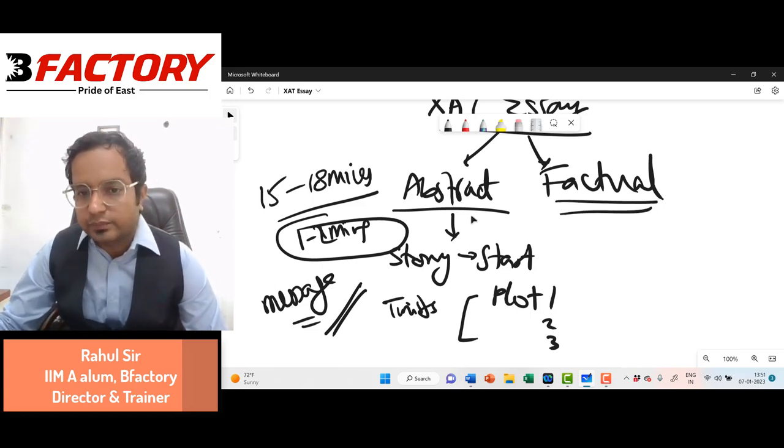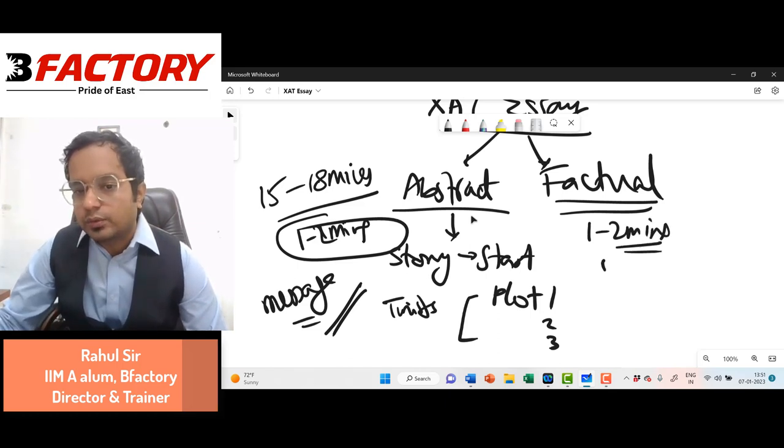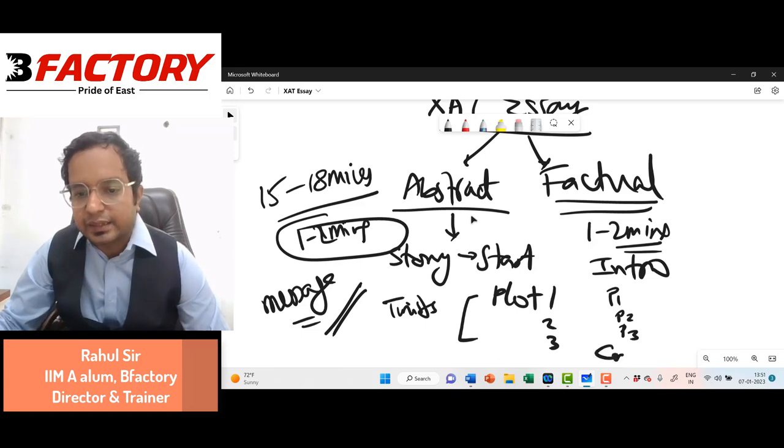If it's a factual topic, you spend one to two minutes to divide this article into three parts: intro, then maybe three to four paragraphs, and then the final closure.